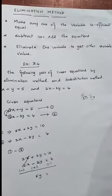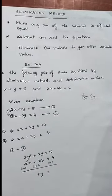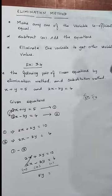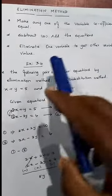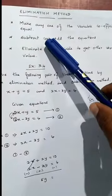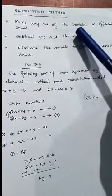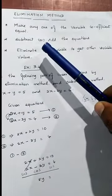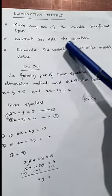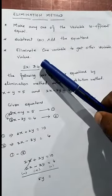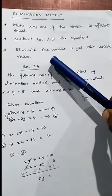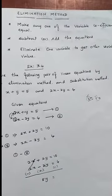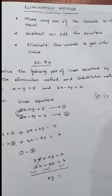Hello students, welcome back to Precursive CBC. Today we will see the third chapter: elimination method. Here we have a few steps to follow. First step: make any one of the variable coefficients equal. Second step: subtract or add the equations. Third step: eliminate one variable to get the other variable's value.